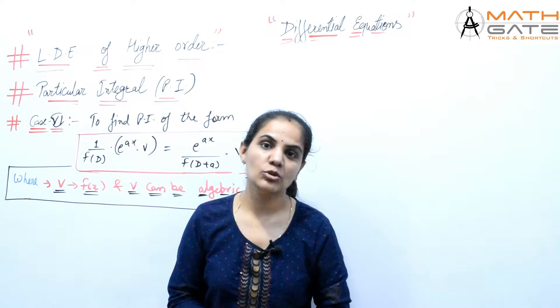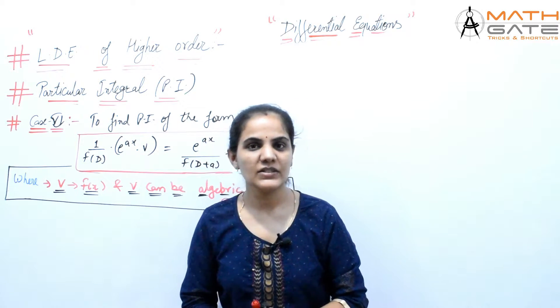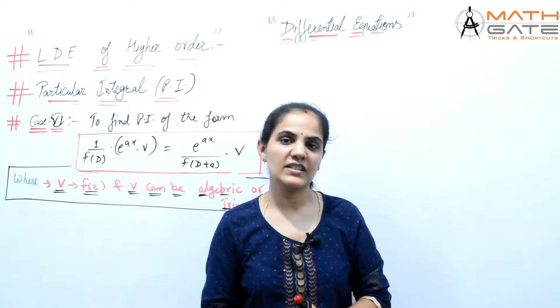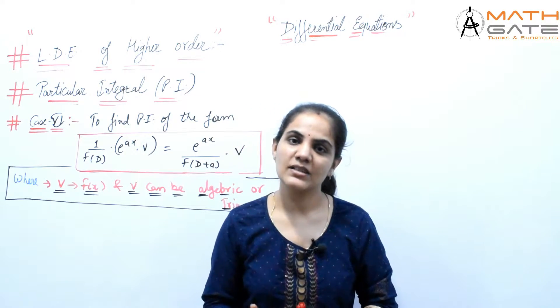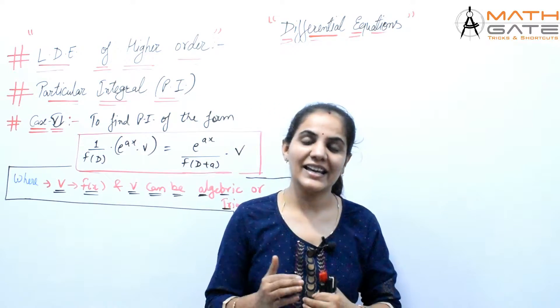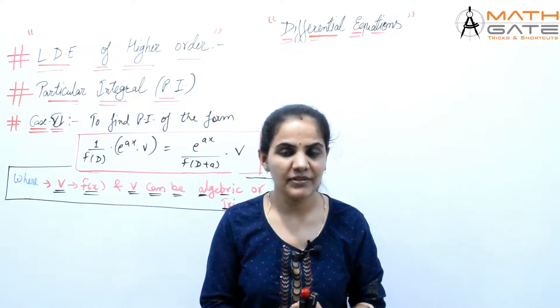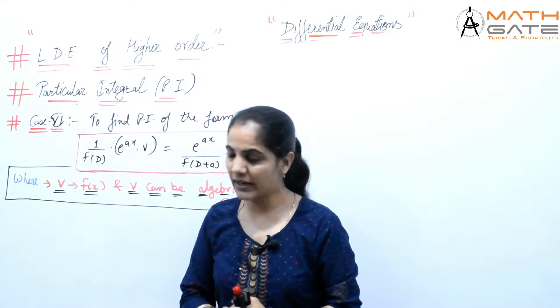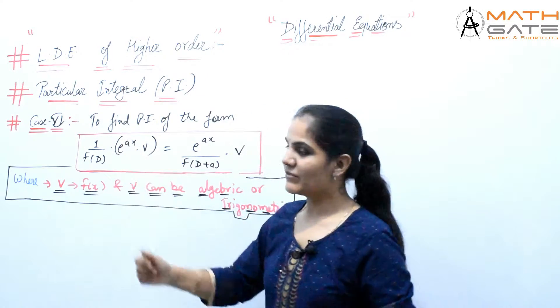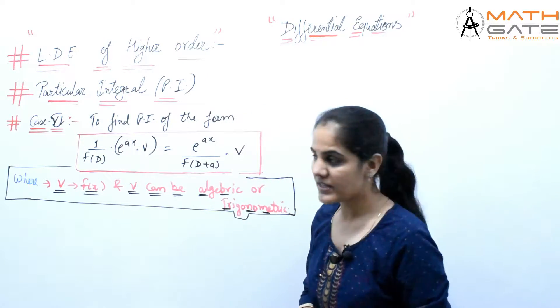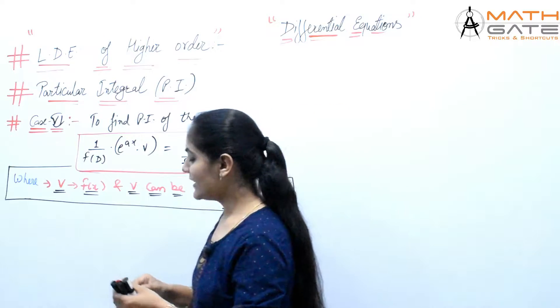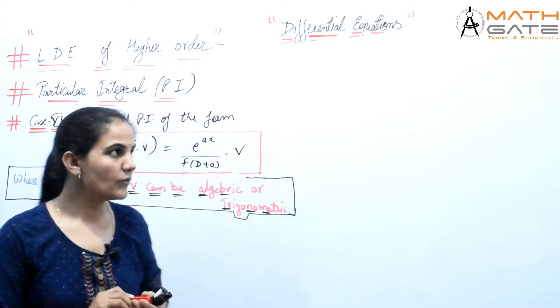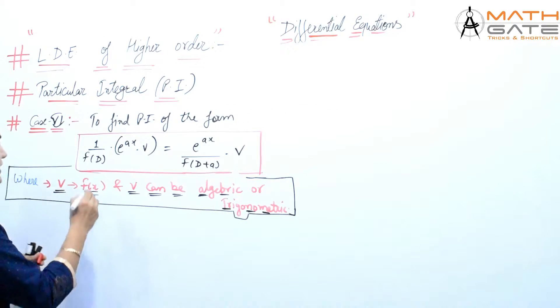Hello students, welcome to Math Guide. In this video we will discuss Case Number 6 and Case Number 7 of particular integral. So let's start with Case Number 6 to find the PI of the form 1 by F(D) into e to the power ax into V.